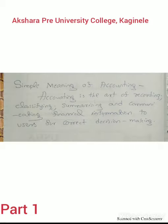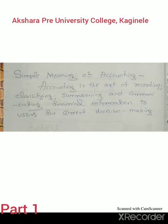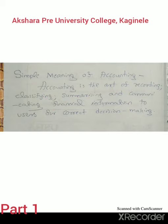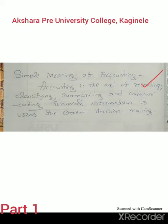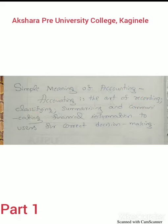First of all, the simple meaning of accounting. Accounting is the art of recording, classifying, summarizing and communicating financial information to users for correct decision making. So accounting only considers financial information and financial transactions. It is the art of expressing financial information — recording, classifying, summarizing and communicating it to users to take correct financial decisions.